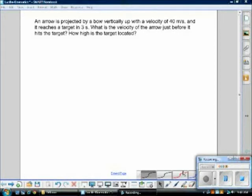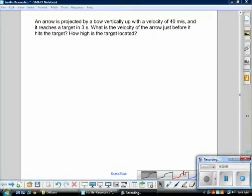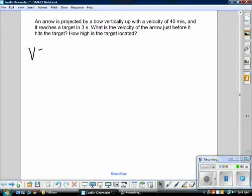An arrow is projected by a bow vertically up with a velocity of 40 meters per second, and it reaches a target in 3 seconds. What is the velocity of the arrow just before it hits the target, and how high is the target located?